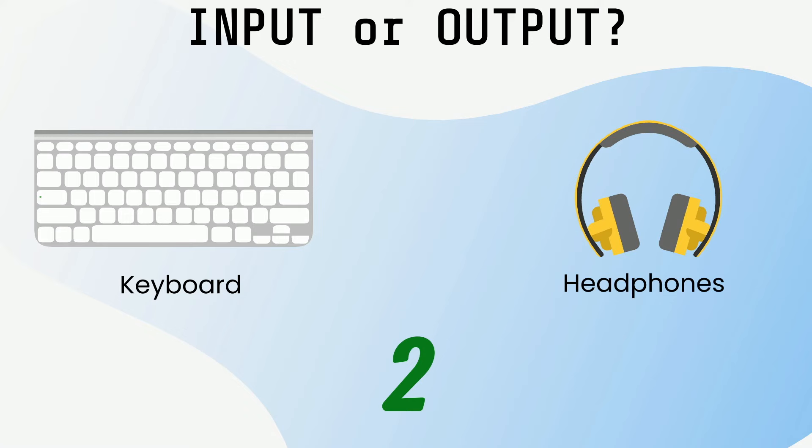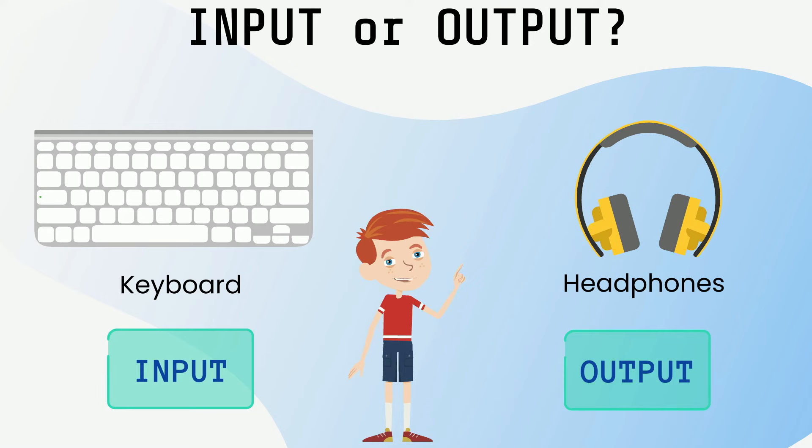Here are the answers. A keyboard is an input device because you can use it to give a desktop instructions to do something. Headphones are an output device because you need to give a computer input in order for it to play music. The music appeals to our sense of hearing.